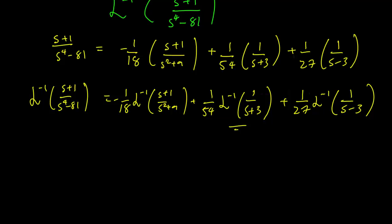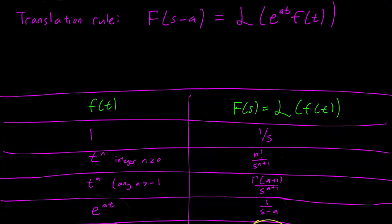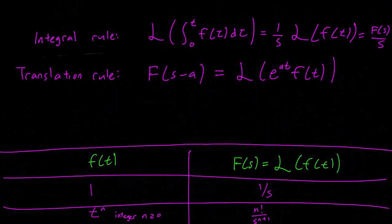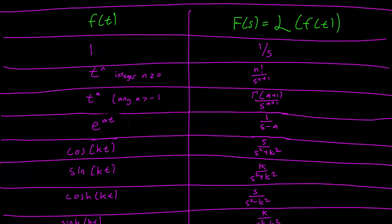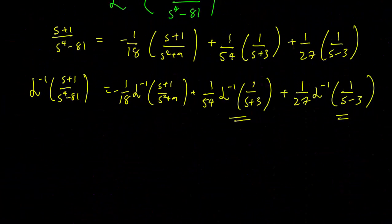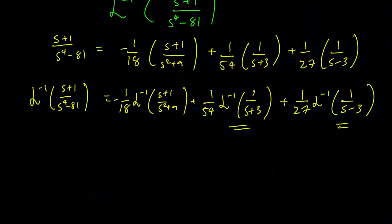So for the second two terms, s plus 3 and s minus 3, those are pretty easy to solve. We consult the table and we see that the e^(at) term works for a equals plus 3 or a equals minus 3. So that gets us e^(3t). This Laplace inverse transform is going to be equal to 1 over 54 e^(-3t) because it's s minus minus 3, plus 1 over 27 times e^(3t).